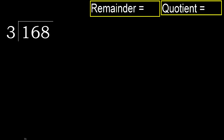168 divided by 3. 1 is less, therefore next, 16 is not less. Therefore with 16 — 3 multiplied by which number is nearest to 16 but not greater?